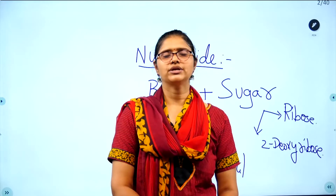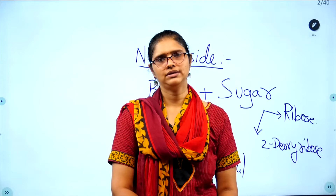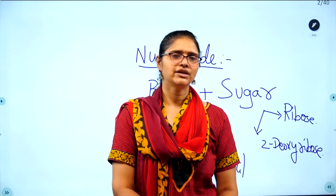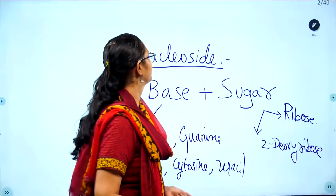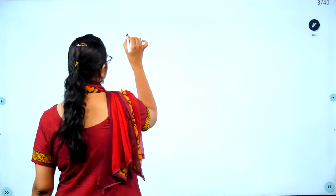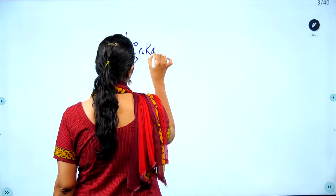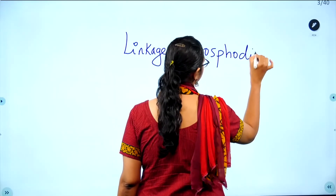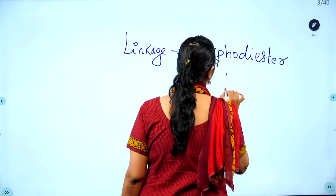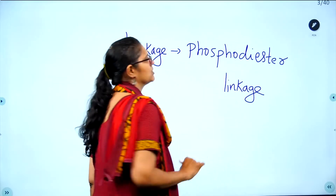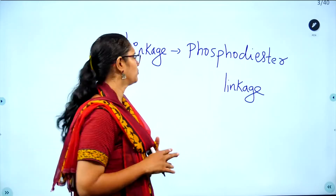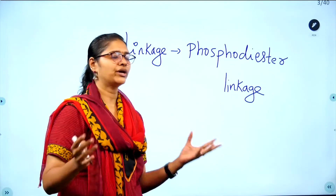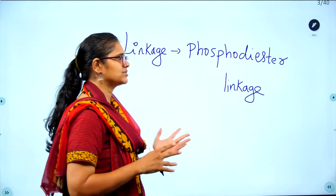Adding phosphoric acid to the nucleoside gives you a nucleotide. The type of linkage present between nucleotides is the phosphodiester linkage — also called phosphate linkage. In this linkage, the H is removed from phosphoric acid and the group is attached, forming the phosphodiester bond.